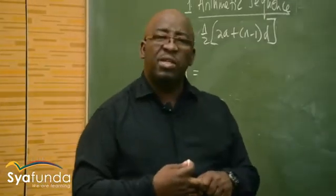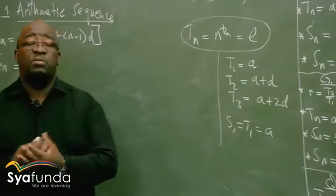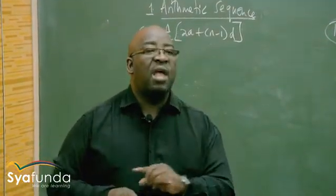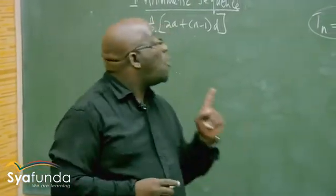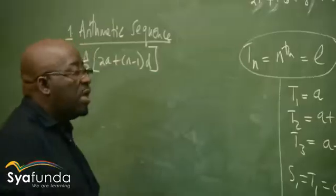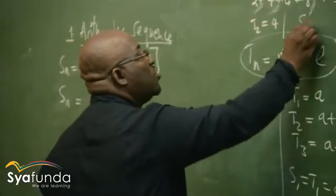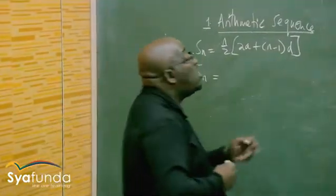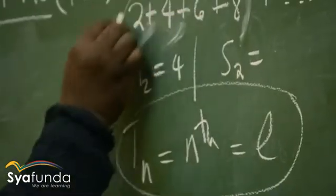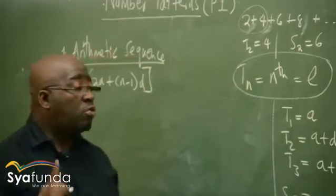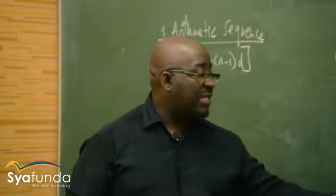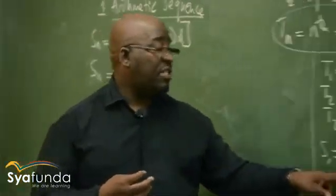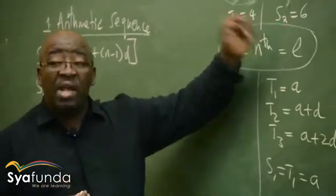What is T2 then? T2 is 4. What is S2? S2 simply means the sum of the first two terms — not just any terms, but the first two terms. S3 doesn't mean any three terms, but the sum of the first three terms. So T2 is 4, but S2 is not the same as T2. S2 is 2 plus 4, which is 6. It is important to note that even though T1 is the same as S1, T2 is not the same as S2.